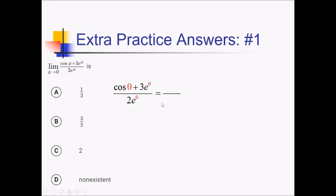That's going to come out to: cosine of 0 is 1, e to the 0 is just 1 times 3 is 3, so we're adding 3 up there. And down here, this is really 2 times 1, so just 2, for a grand total of 4 over 2, or just simply 2, giving me choice C.